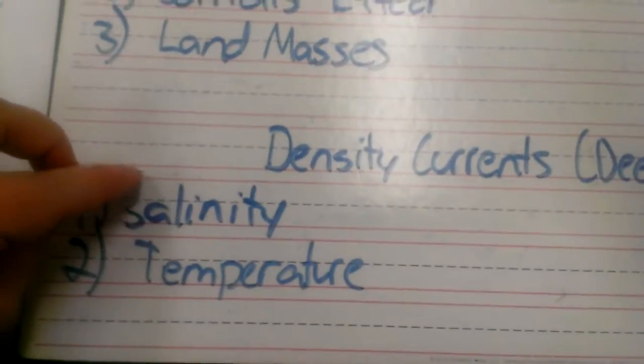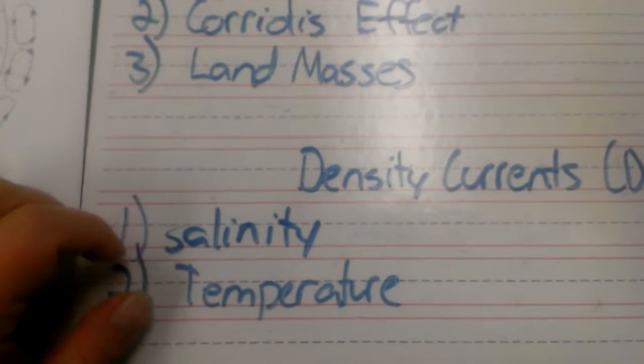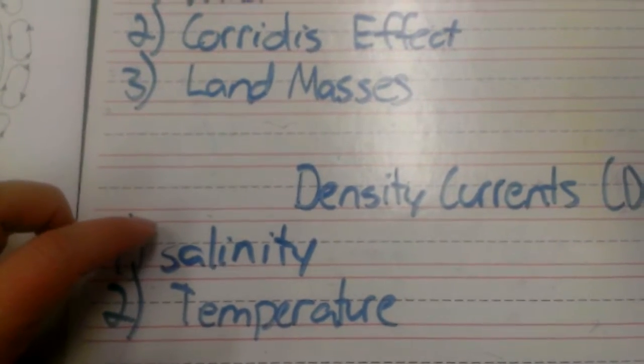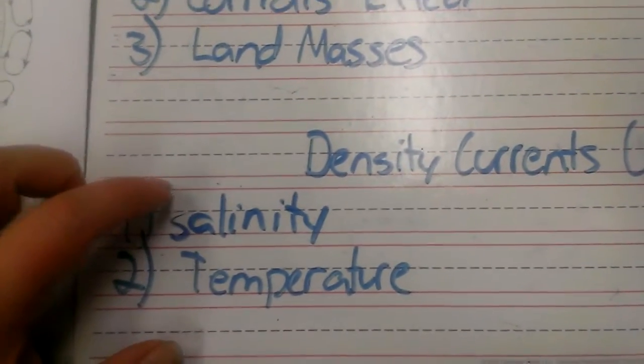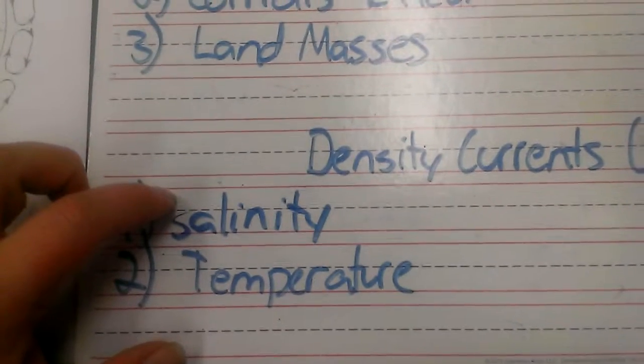Saltier water sinks, so things like the Mediterranean Sea—it's much saltier because there's a high level of evaporation and low precipitation. So the water's saltier, and that water would sink when it enters the Atlantic, and it does.